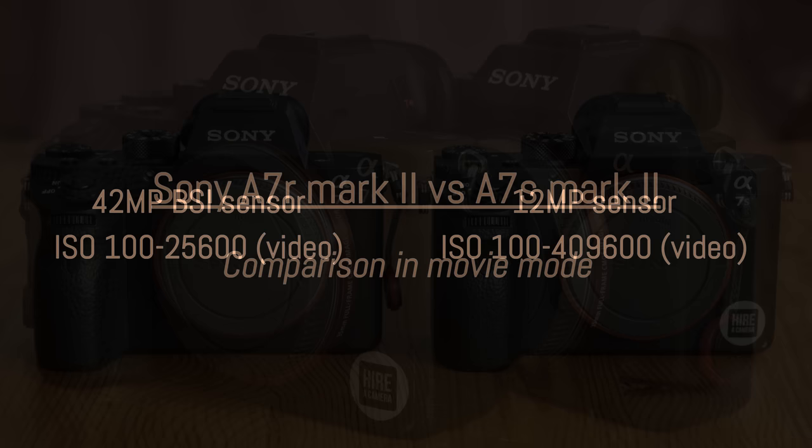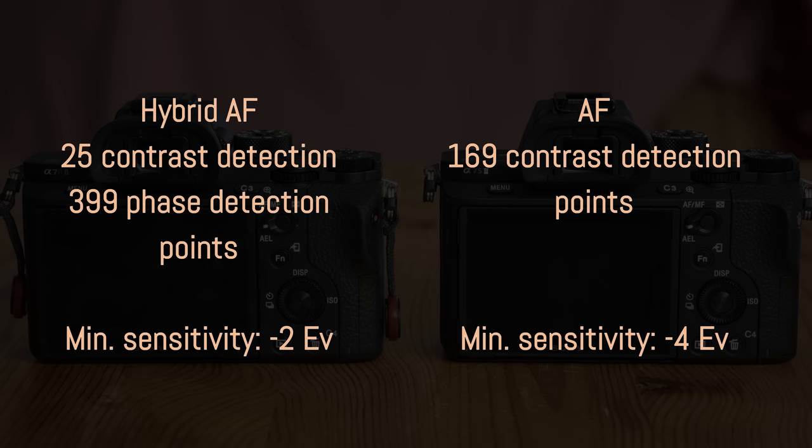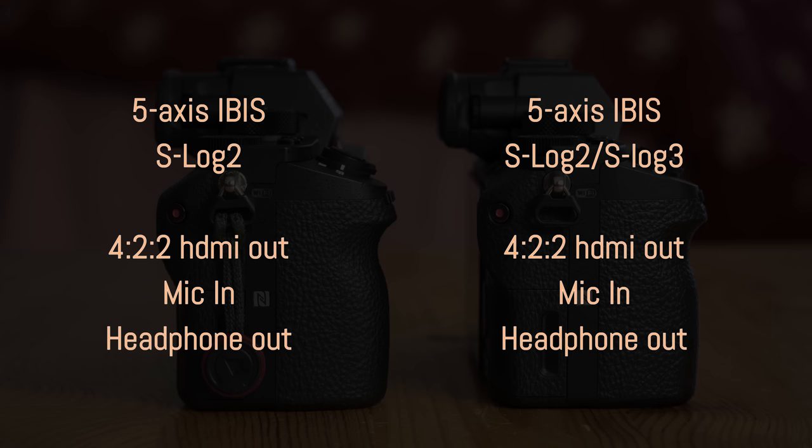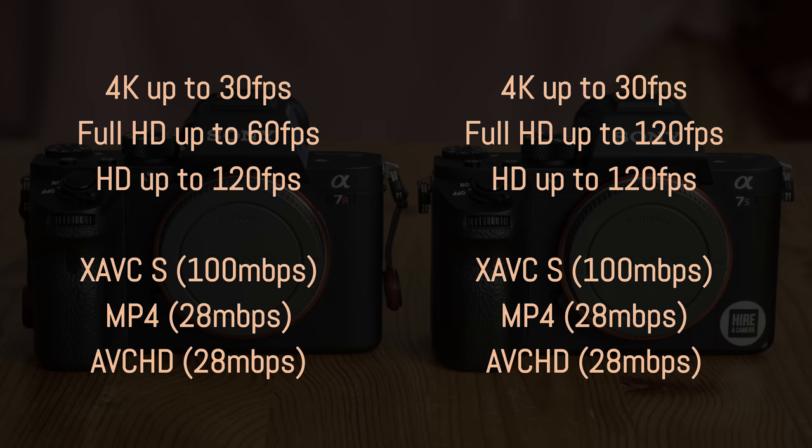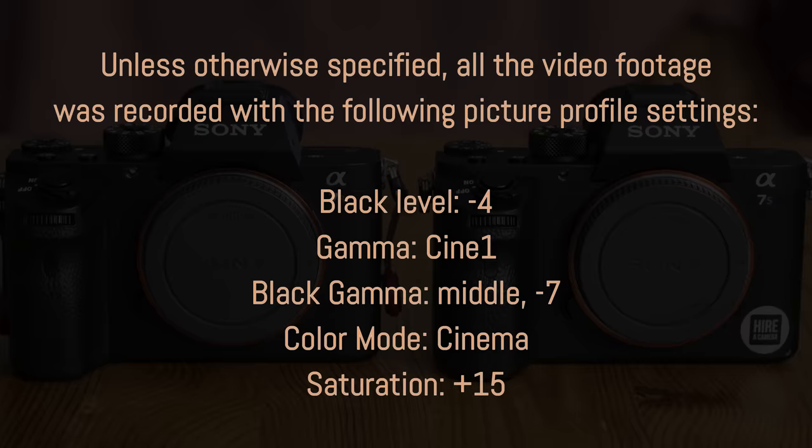Hi everyone and welcome to a new video by MirrorLessons. Today I'm going to show you the difference in image quality and performance between the A7R Mark II and A7S Mark II concerning the video capabilities. In some examples I will show both the full frame and Super 35 mode on the A7R Mark II, because the camera gives its best performance in Super 35 mode while the A7S Mark II gives the best performance in full frame mode.